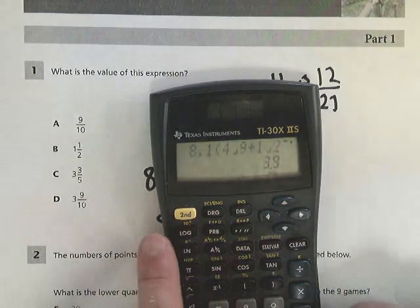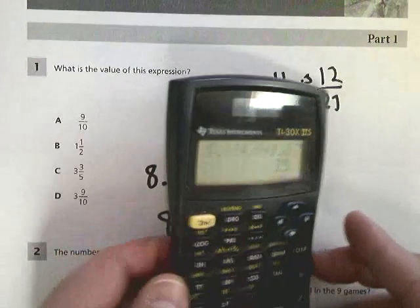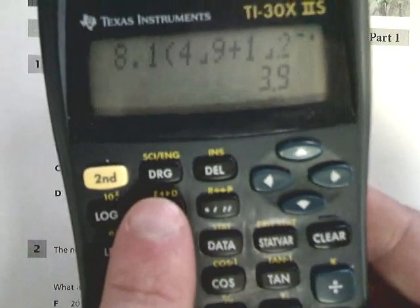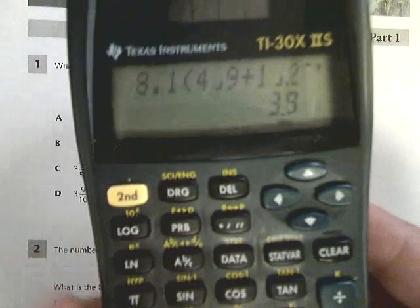Let me see if I can get it up a little higher. You see how it says right here? It says F to D and D to F. That's the fraction decimal button.